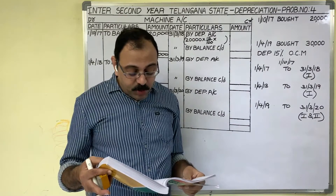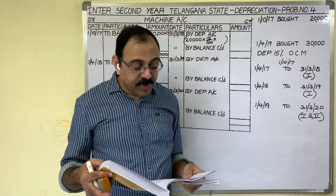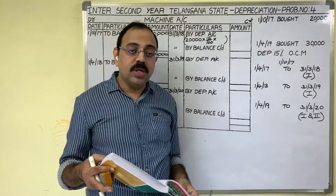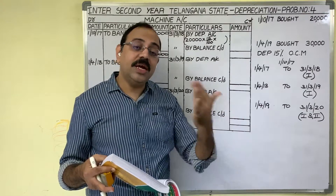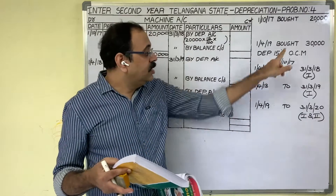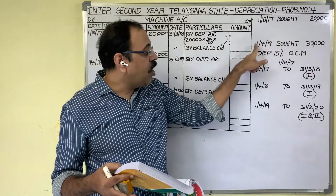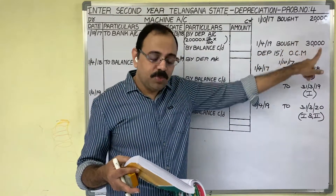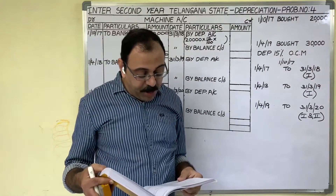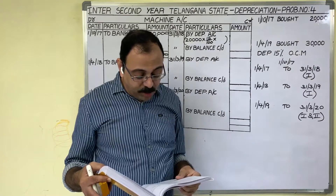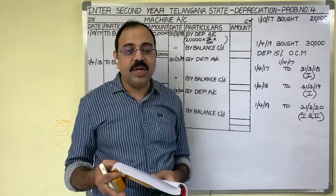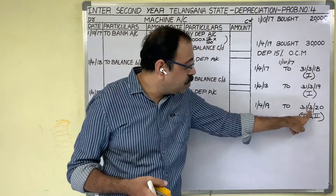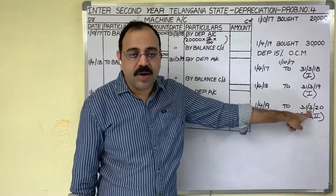Another machine was bought on 1st April 2019 for 30,000 rupees. Here also they purchased an additional machine. We need to prepare the machinery account up to 31st March 2020.